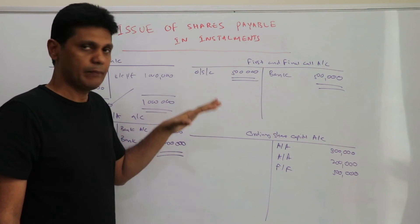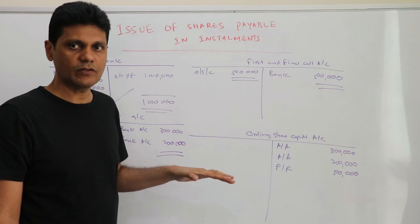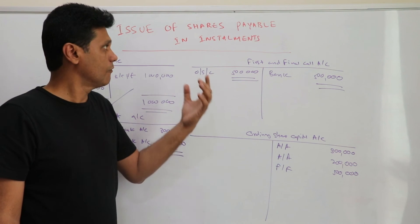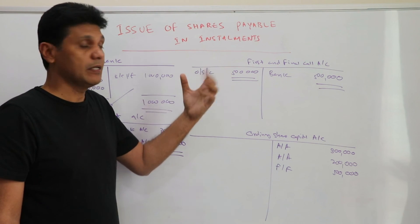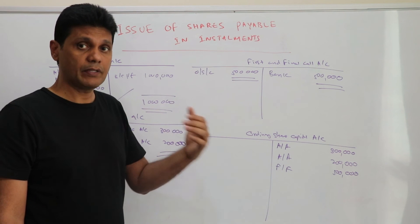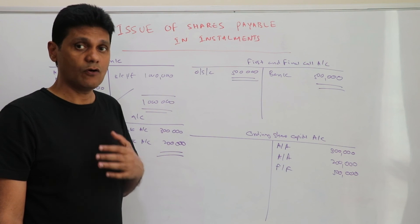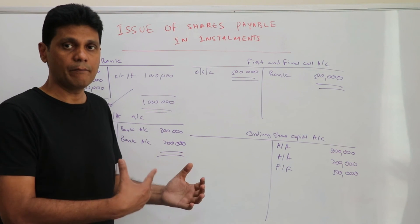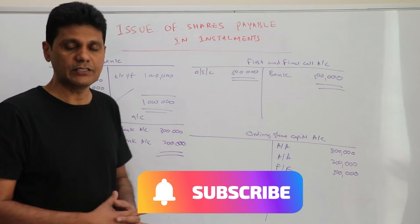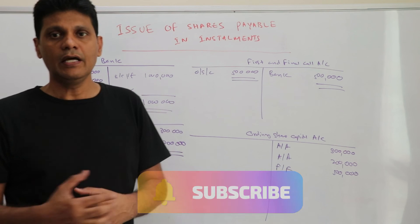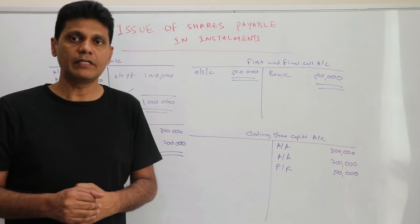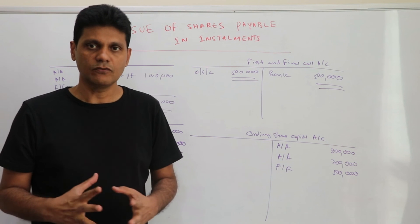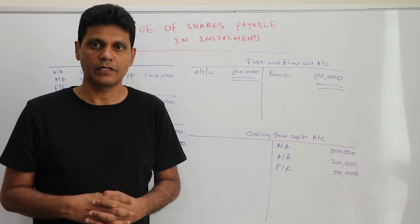This is how you record shares payable on an installment basis — a very basic question. In the next session, we'll move on to a more complicated scenario where shares are payable in installments with a premium and where the shares are oversubscribed, and discuss how those transactions affect the journal entries and ledger accounts. Thanks for watching!